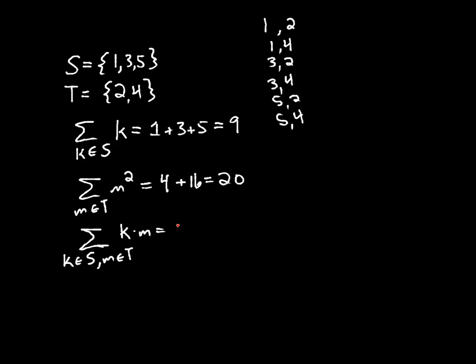Okay. So this is actually going to have six terms. And the terms are going to be the products. So it would be 2 plus 4 plus, I'm just multiplying these together, plus 6 plus 12 plus 10 plus 20 is what the sum overall k in S and m in T of k times m would be.